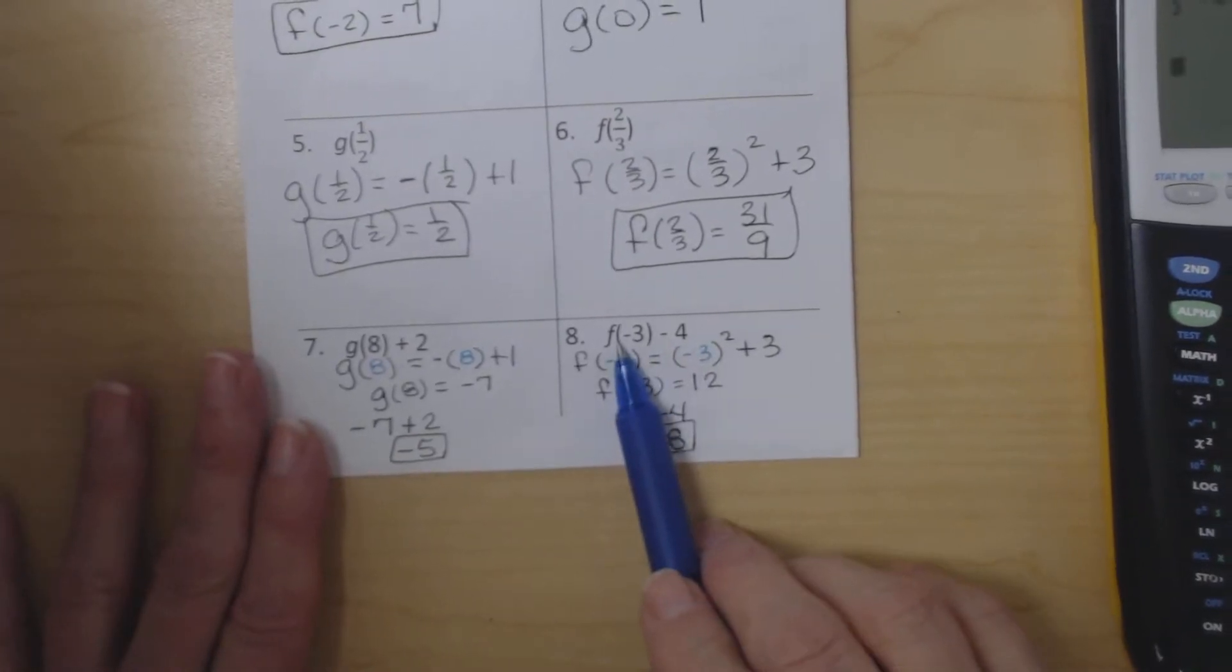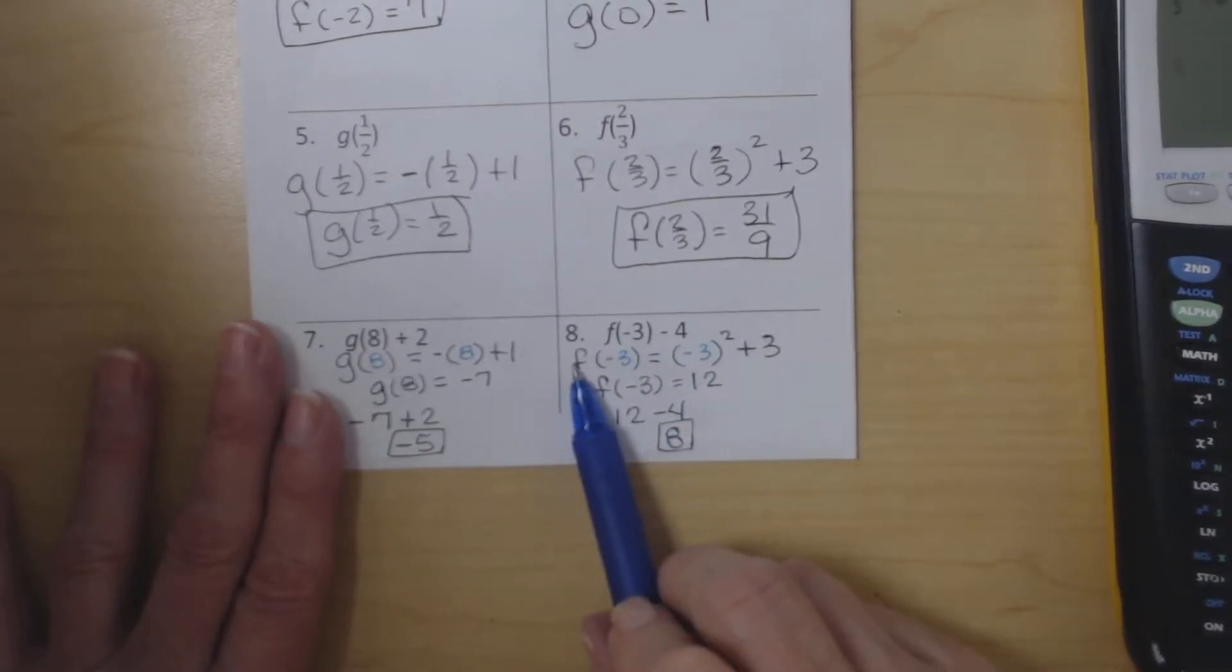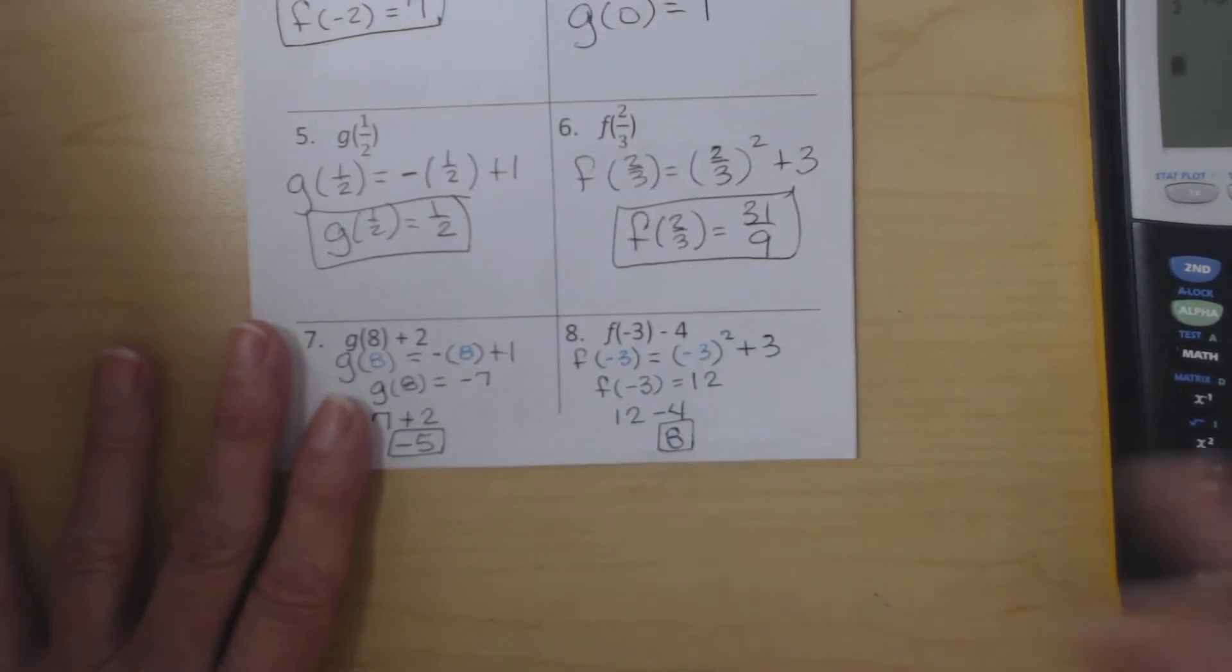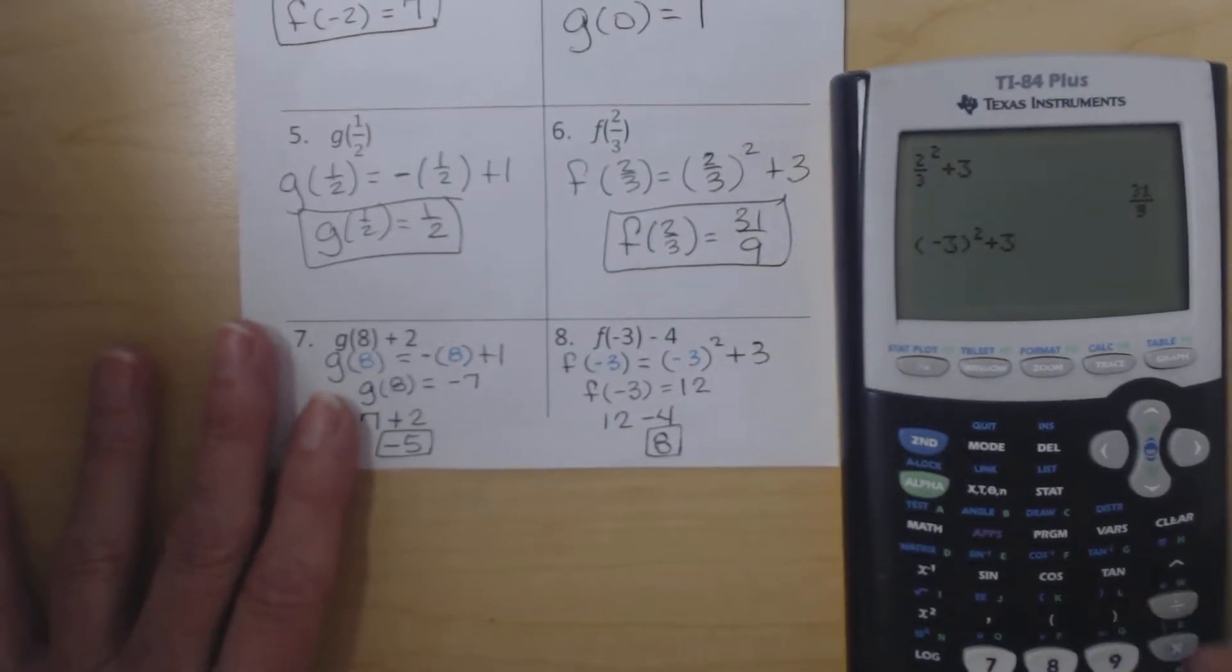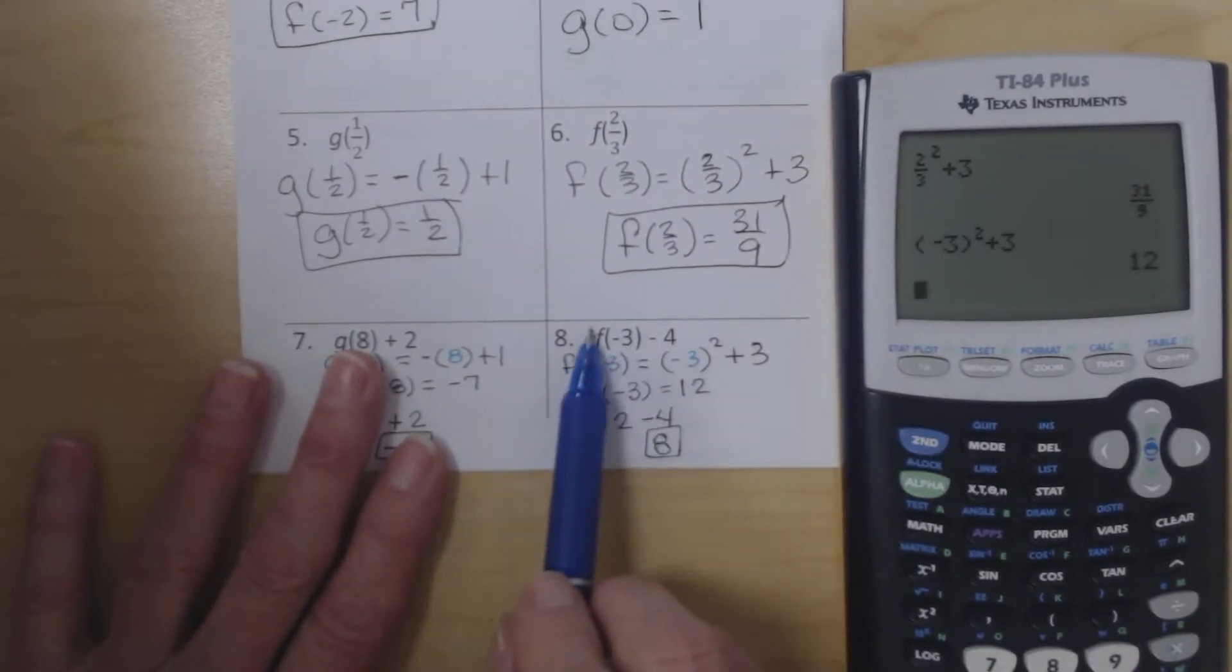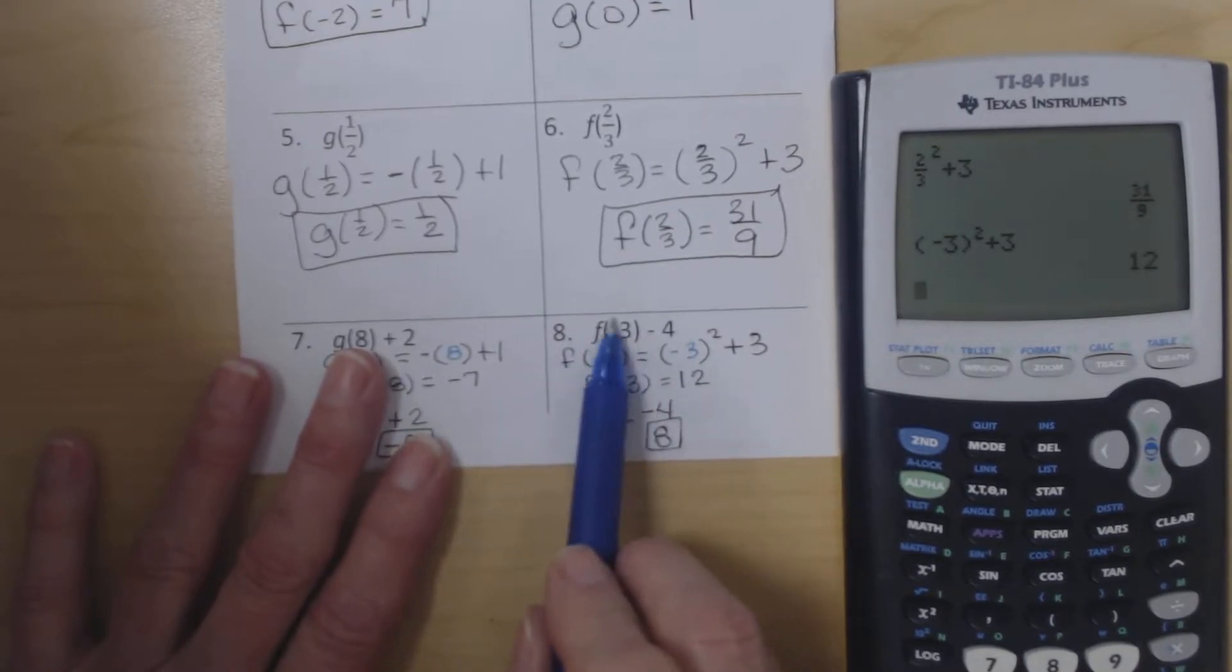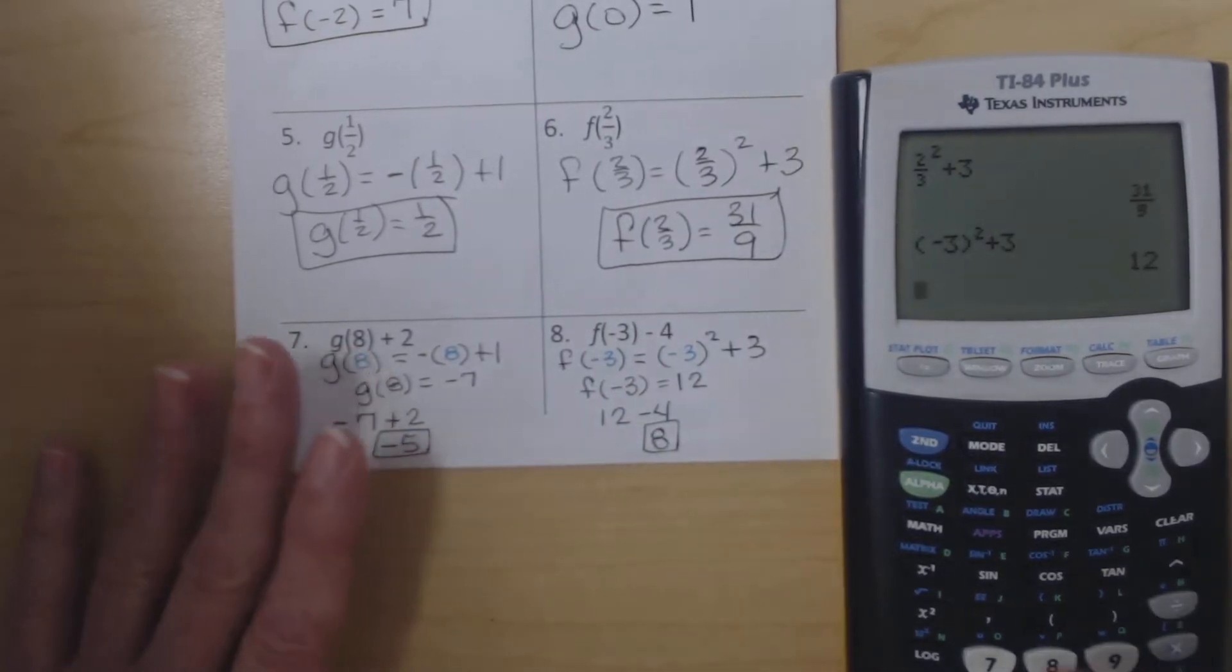For number 8 we are evaluating the function f at -3, and then we're going to subtract 4. So we're going to take the function f which was x squared plus 3. Evaluate it at -3. So I'm going to take the calculator, do -3, square it, plus 3. So this is what it looks like in your calculator. Hit enter and we get 12. So we know the value of the function at -3 is 12. So now I'm going to replace this f(-3) right here in the original problem with 12. Keep my subtract 4, and 12 minus 4 is 8.